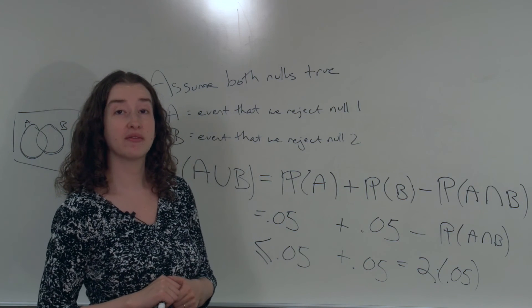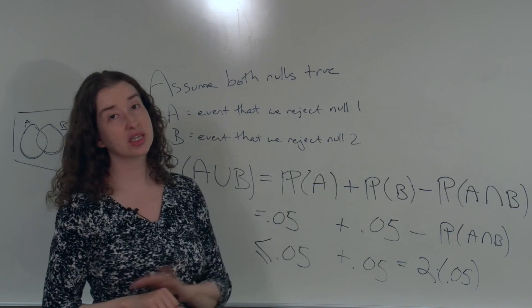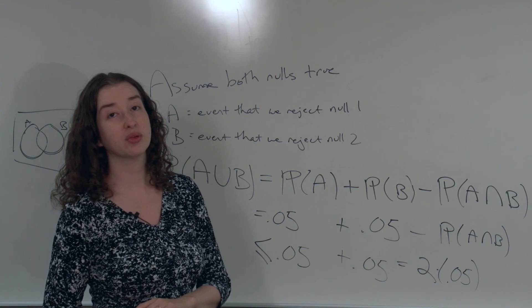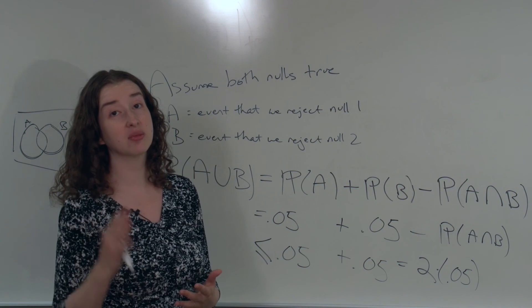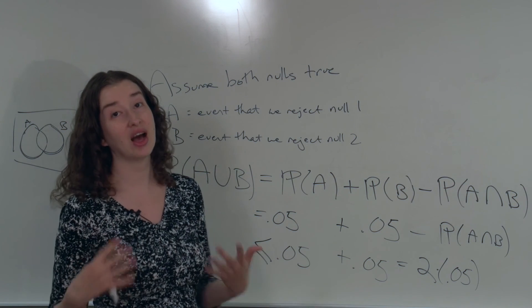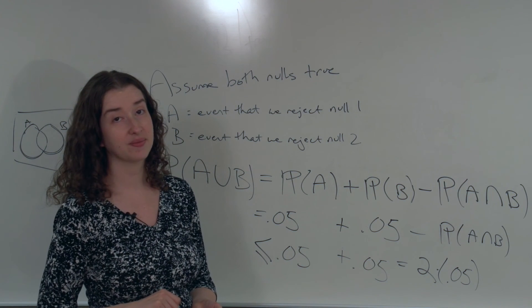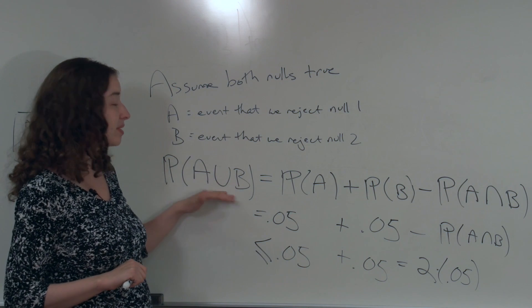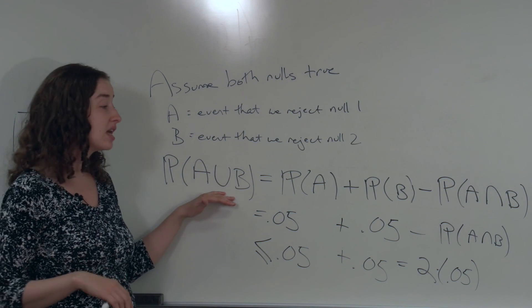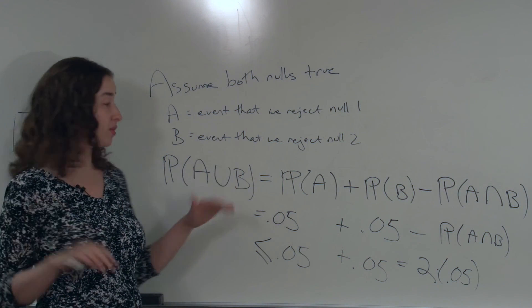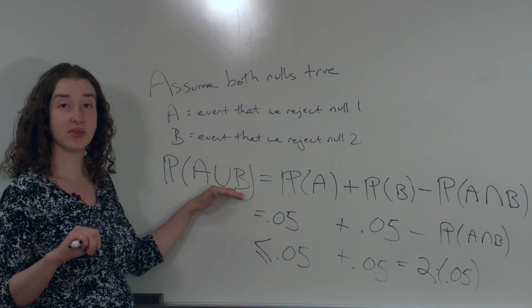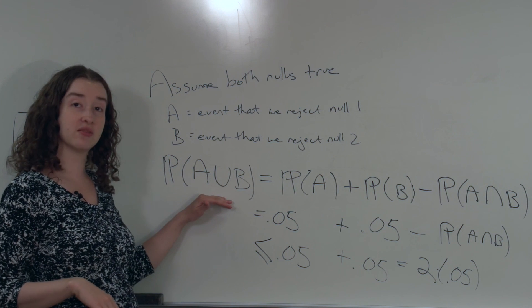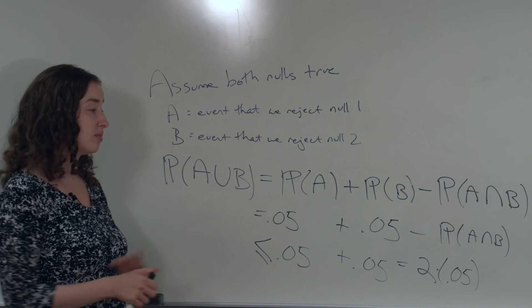So how are we going to turn that into the Bonferroni method? How are we going to use this calculation to come up with a plan, a way to deal with a multiple comparison problem, a way to deal with the fact that if you conduct multiple tests, you're going to have a higher chance of making some mistakes? Suppose that our goal is for the probability of A or B, the probability of making at least one mistake, to be no bigger than 0.05. In other words, I want this quantity here to be capped at 0.05. I want to come up with a way to handle each of my tests such that the overall chance of making at least one mistake on any test is no bigger than 0.05.